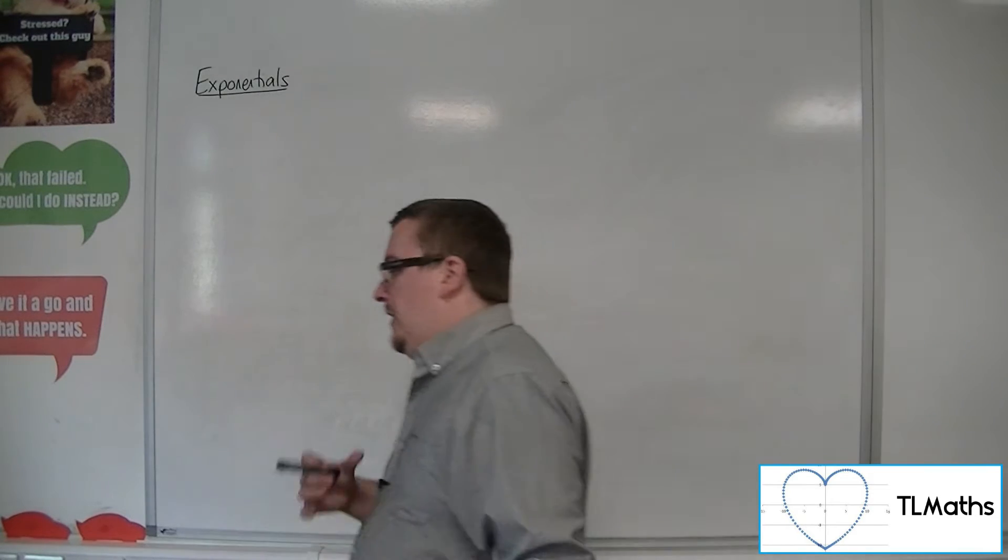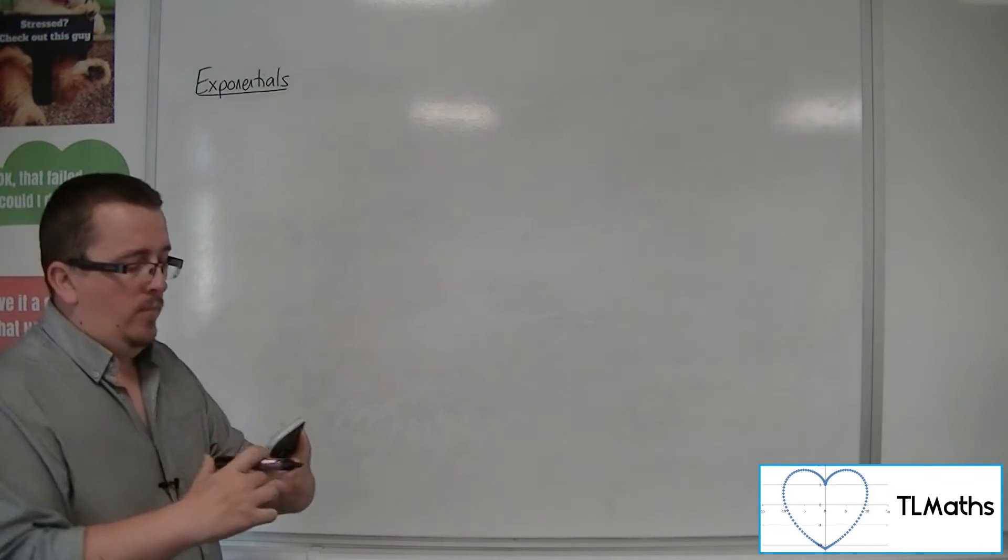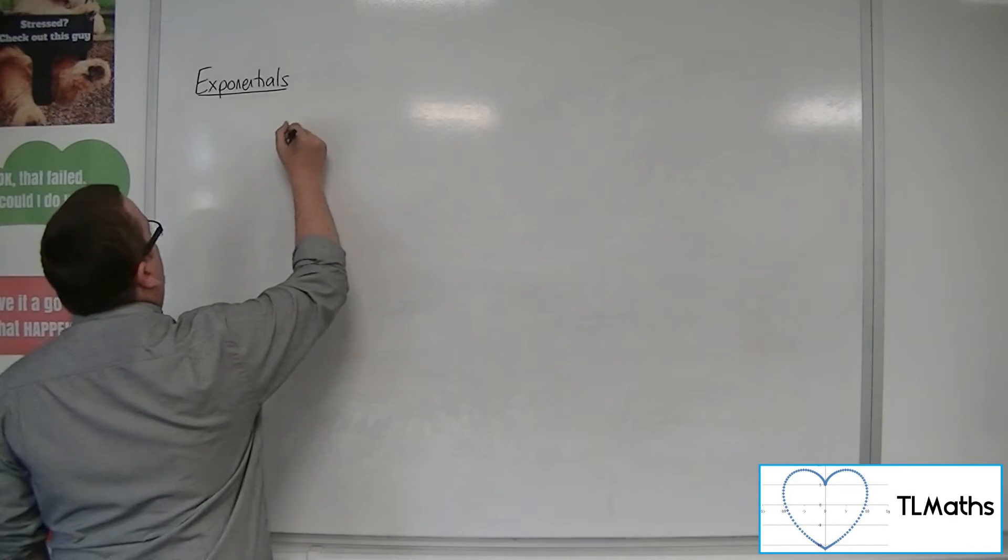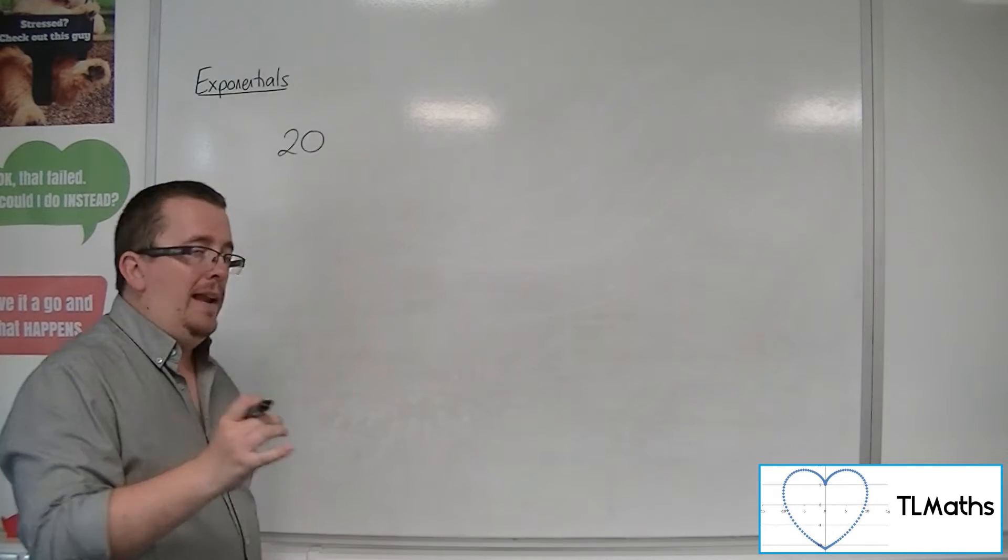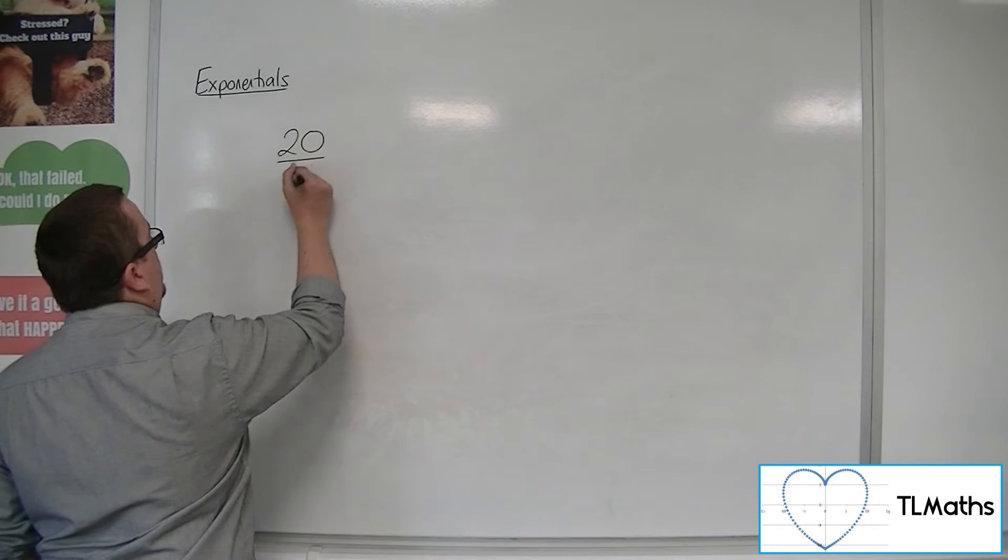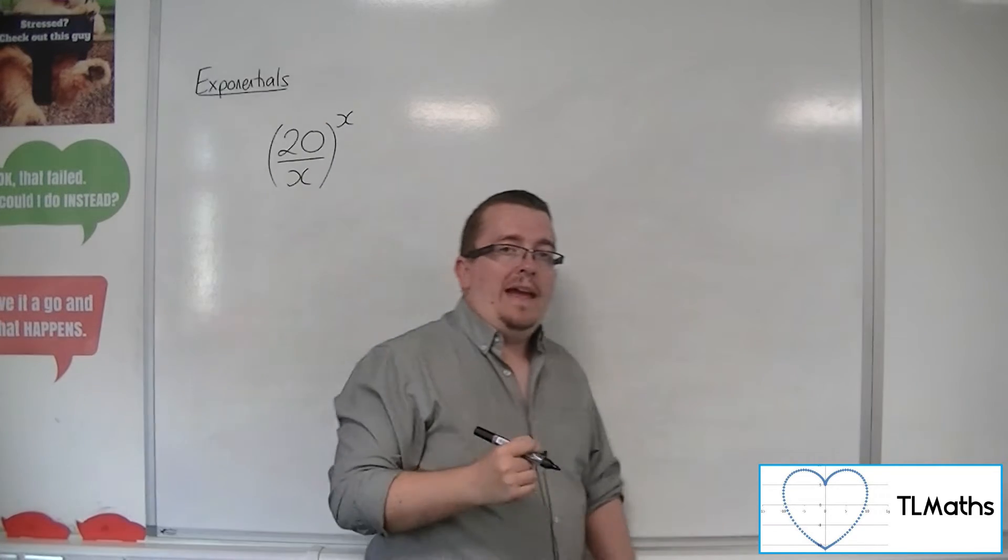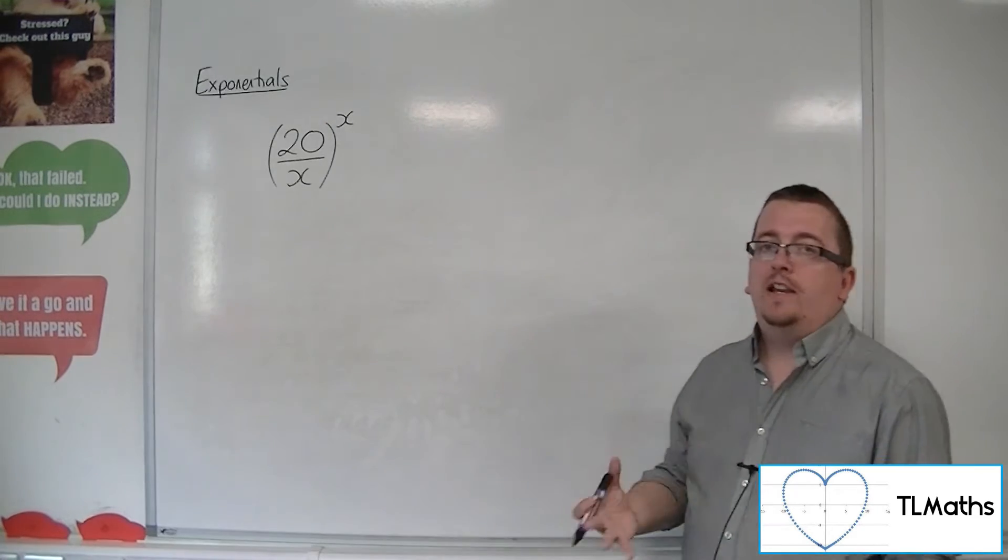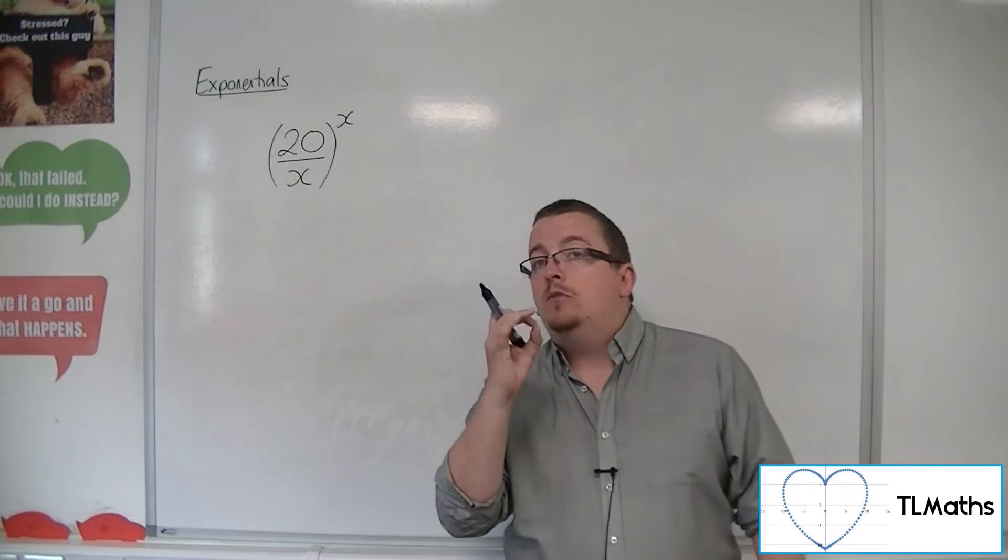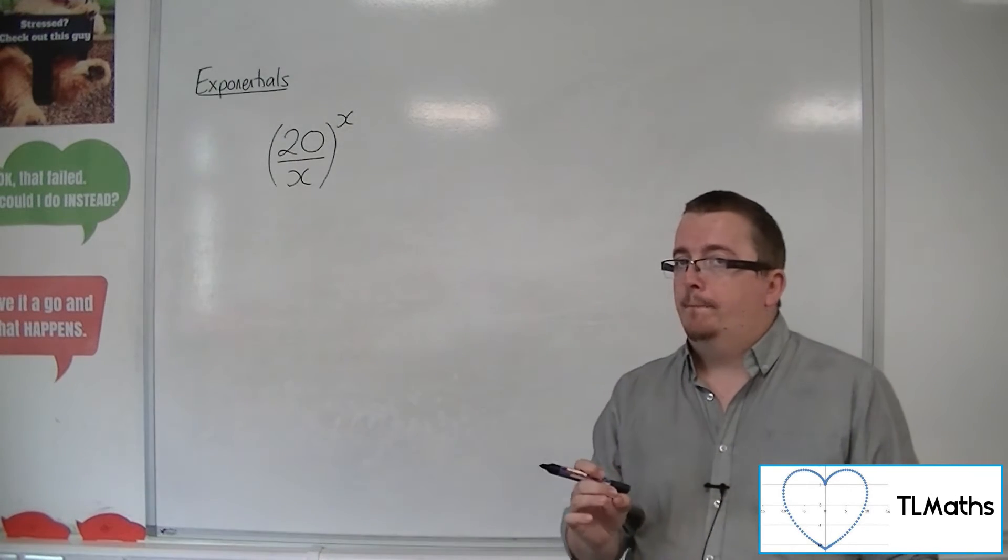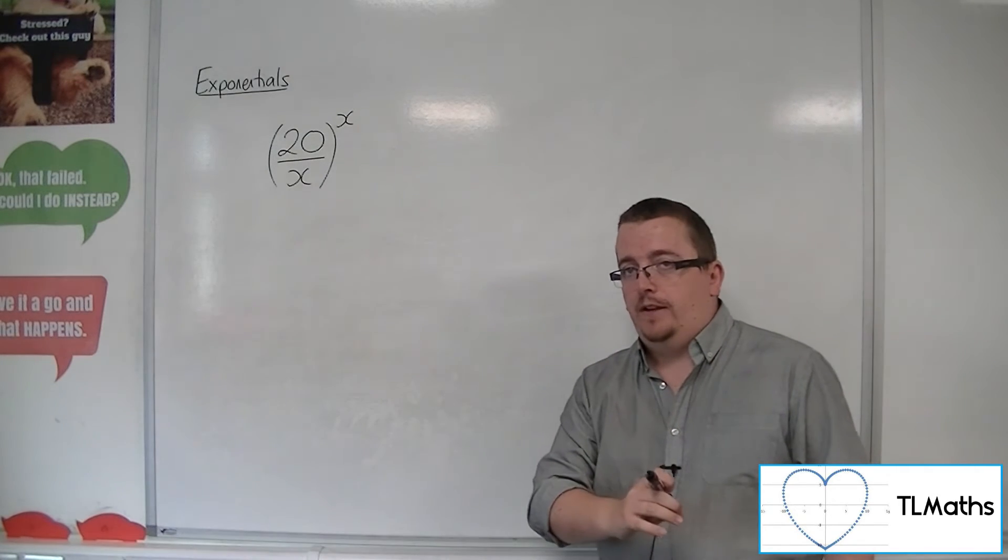So what I'm going to do is I'm going to set you up with this problem where I'm going to give you the number 20. What I want you to do is I want you to find the maximum value of 20 over x to the x, the maximum value that it can possibly be. What value of x will get you that maximum value as well. So what is the maximum value and what value of x will get you to that?